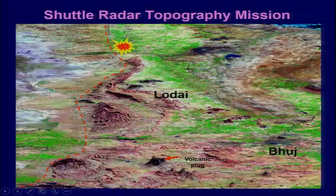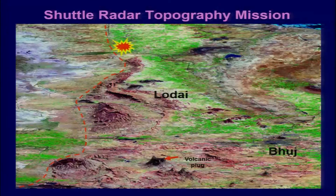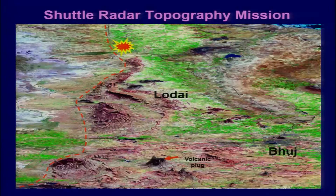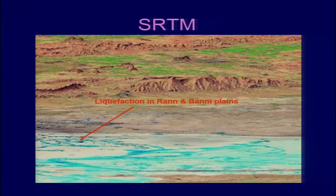In this lecture I will also show the liquefaction features which we observed from the Great Rann of Kutch. The hard rock area also experienced severe shaking because the epicenter was not far from this region, and most of the cities and towns were devastated. This data was captured after the 2001 Bhuj earthquake, showing in particular the region south of the mainland Kutch — the Banni Plains — which shows liquefaction in the Rann and Banni Plains.